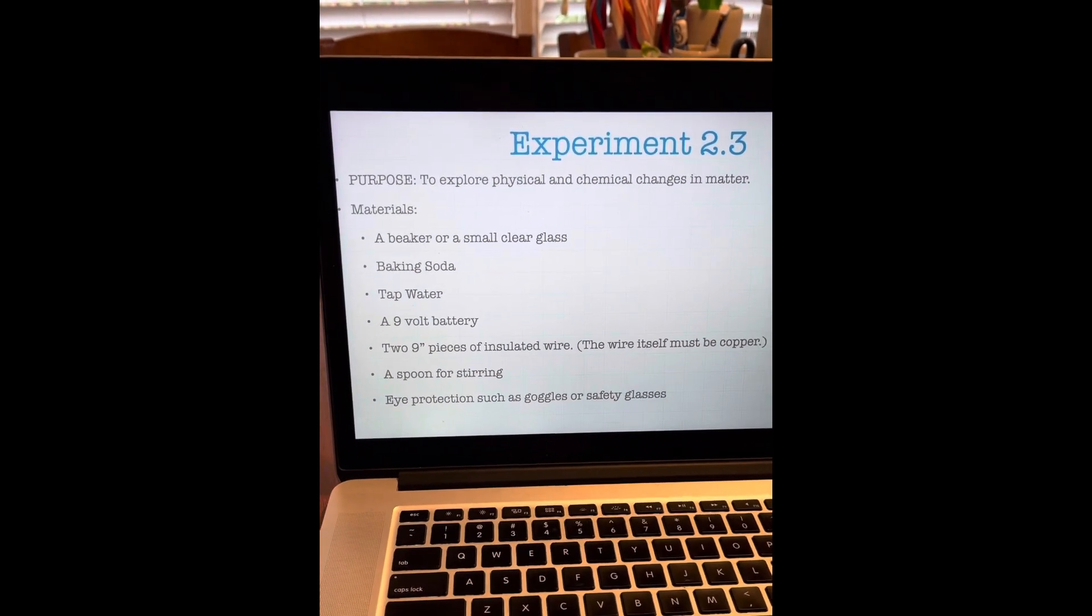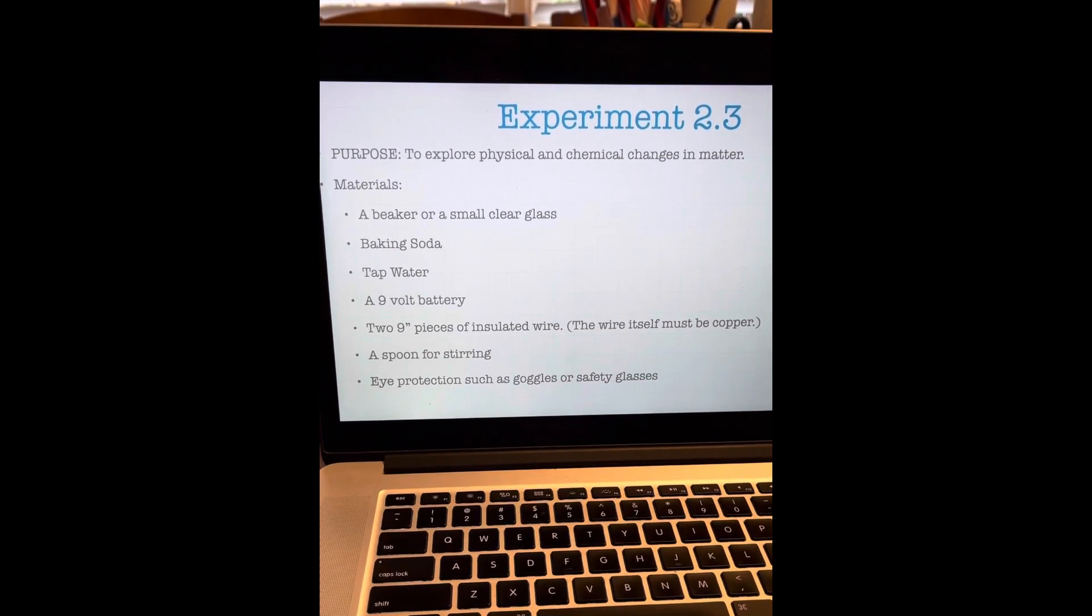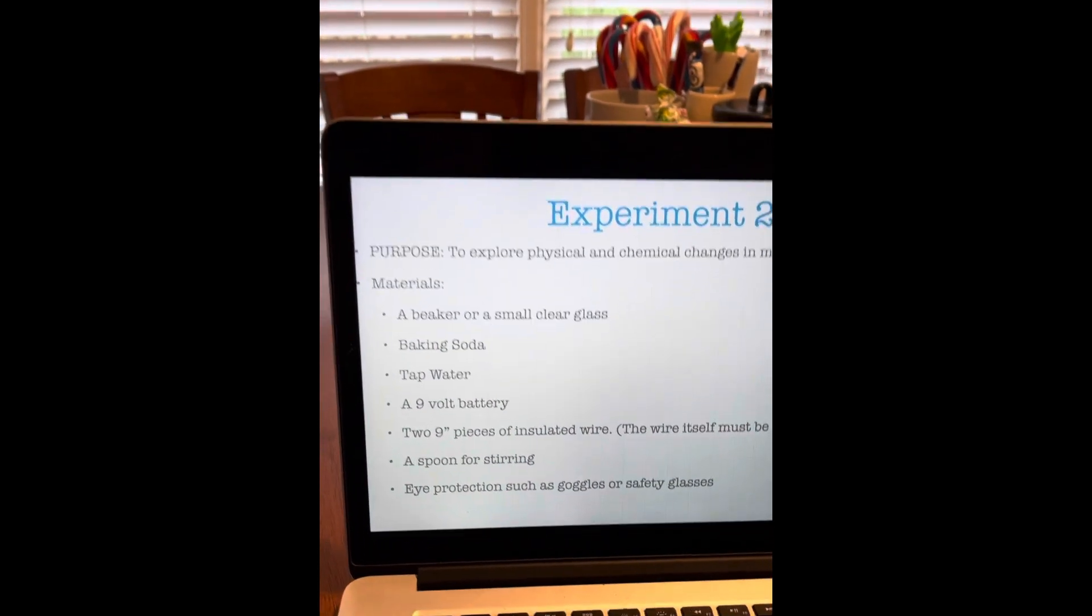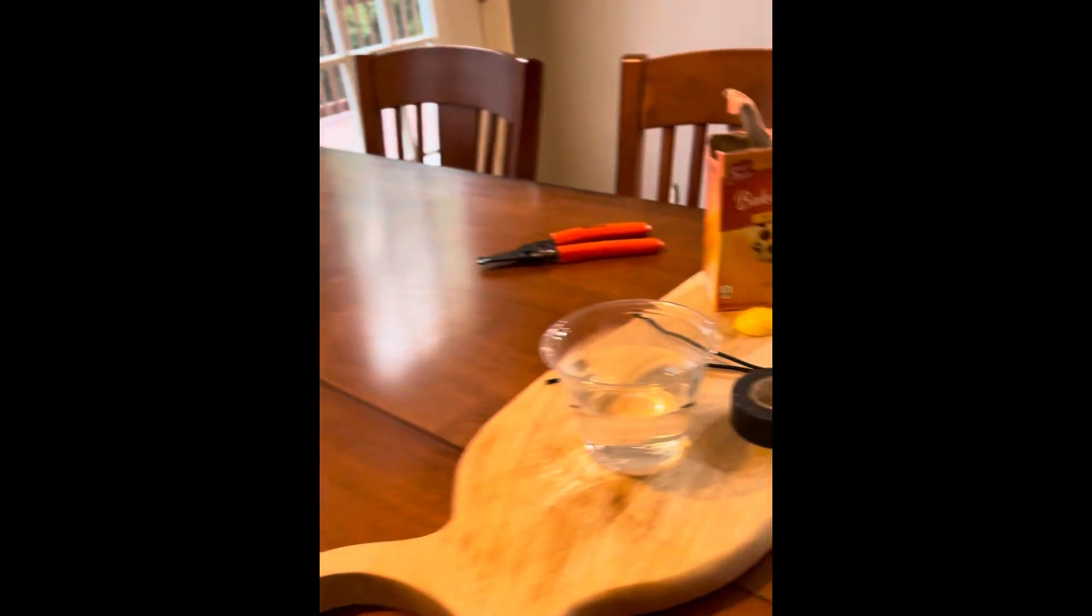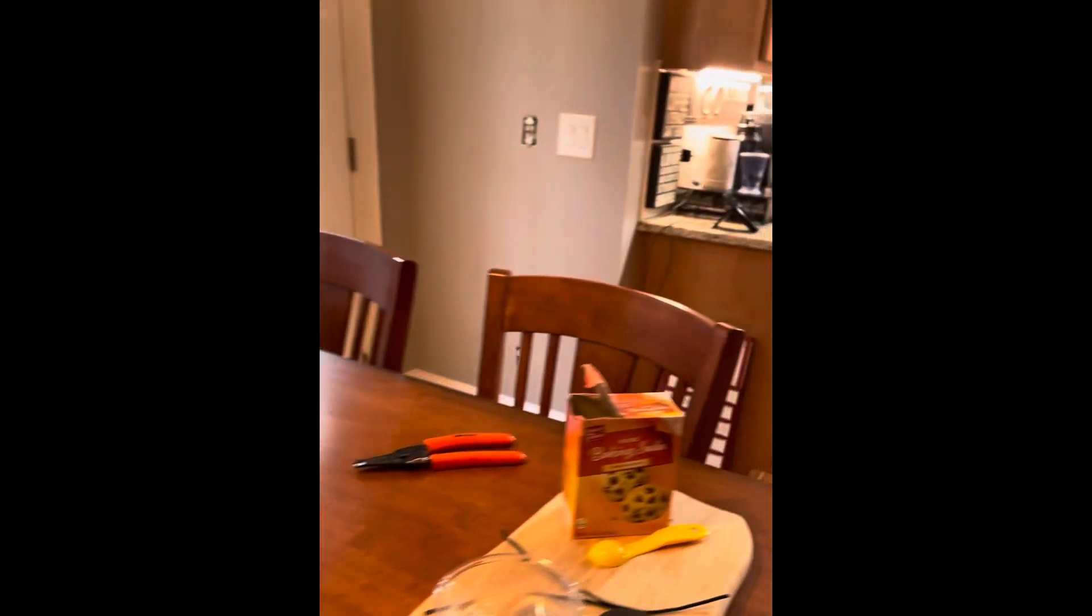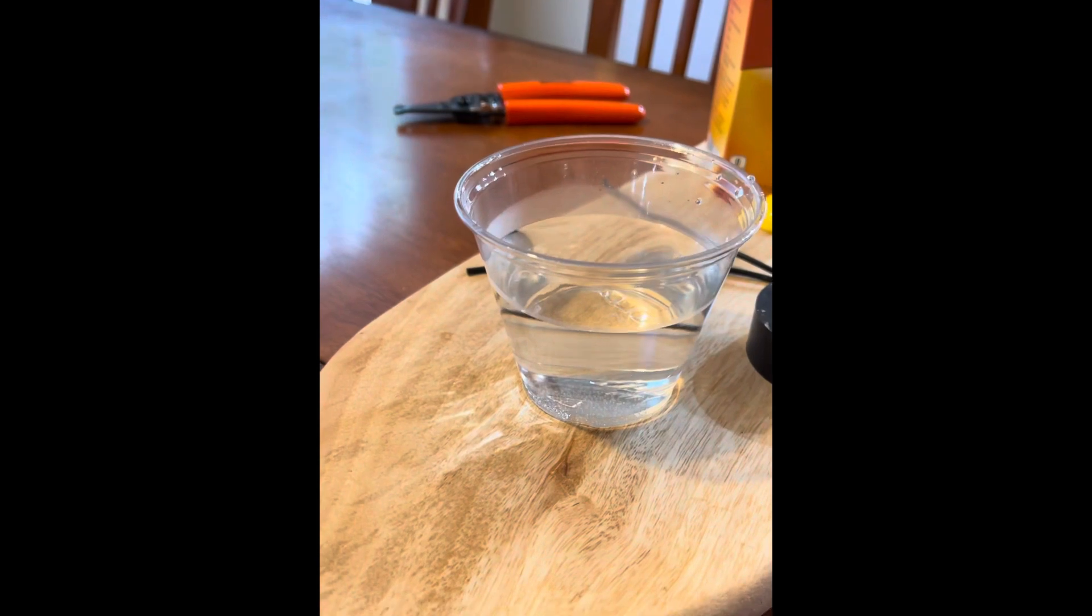The purpose of this experiment is to explore physical and chemical changes in matter. The materials we're going to use are a beaker or a small clear glass. Well, of course, our chemistry kit still did not come in, so we have our glass. We're going to need some baking soda. We have that. There's some tap water already in there.